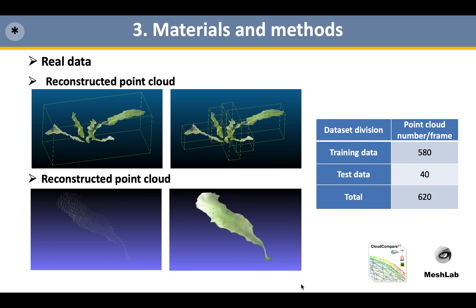Next, the 3D data was labeled to build the instance segmentation dataset. The segmentation function in CloudCompare software was used to manually segment the point cloud into different leaf instances. After segmentation, each leaf point cloud was downsampled to 2048 points. For leaves with fewer than this number of points, the surface was reconstructed as a mesh model using the ball pivoting algorithm. The reconstruction results are shown in the figure.